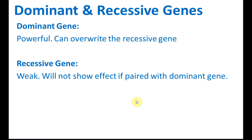To understand the mechanisms of inheritance, first of all, we need to know what dominant genes and recessive genes mean. The dominant gene is a gene which is very powerful and it can override the recessive genes. So inside the genes we have dominant and recessive genes. Only the dominant genes will show its characteristics. The recessive gene is the hidden gene — its characteristic is carried inside the nucleus but not shown. Recessive genes are weak and will not show effect if paired with dominant genes.